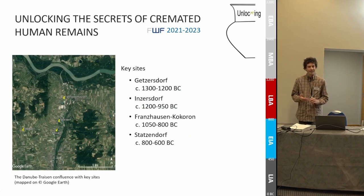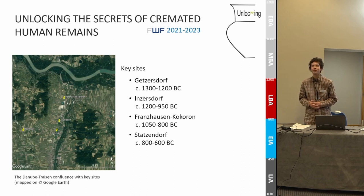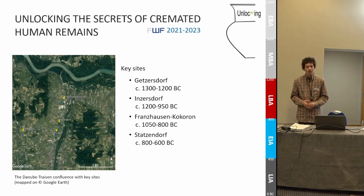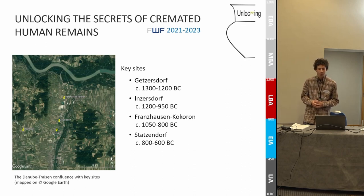The four cemeteries, Getzersdorf, Inzersdorf, Franzhausen-Kokoron, and Statzendorf, encompass a total of 1065 graves, and have been selected to cover the entire time period from the beginning of the Urnfield phenomenon around 1300 BC to the early Iron Age at around 600 BC in one single region. It is quite astonishing that there are almost no published C14 dates from this period at the Treisen Valley. So this is a good opportunity to tie the type of chronology to absolute dates.